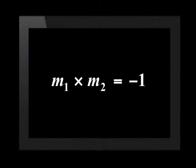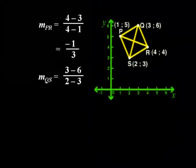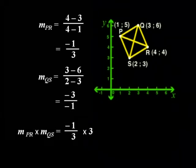The gradient is 4 minus 5 divided by 4 minus 1. So for P, R, that will be negative 1 third. Then for Q, S, the gradient is 3 minus 6 divided by 2 minus 3. So that's 3. Negative 1 third times 3 is equal to negative 1.